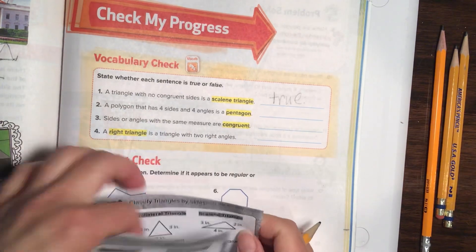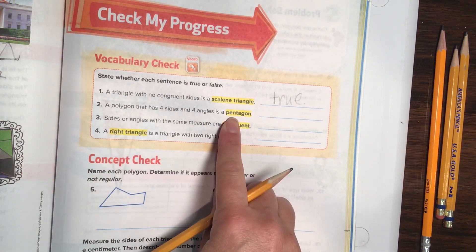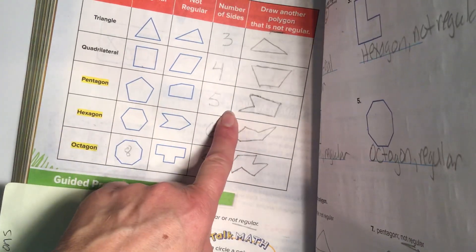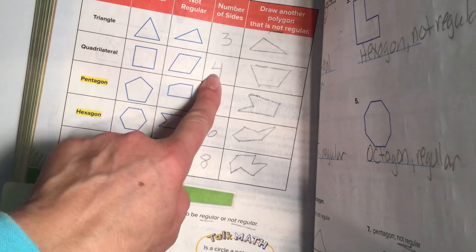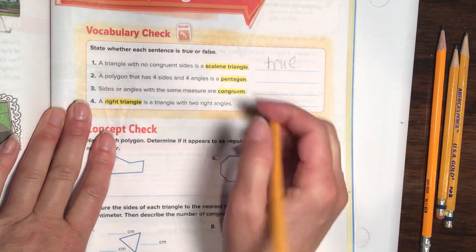Okay, next one. A polygon that has four sides and four angles is a pentagon. Well, let's go to our page 904 where we can see a pentagon. A pentagon. Oh, pentagon has five sides. Quadrilateral is the four sides. Alright, so right here, this statement right here is false.